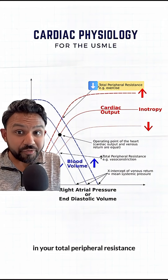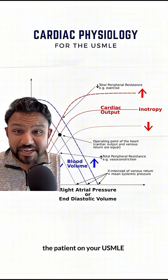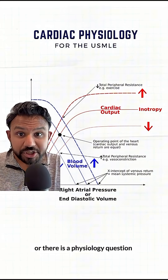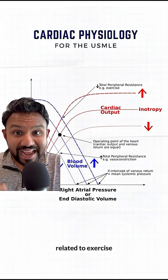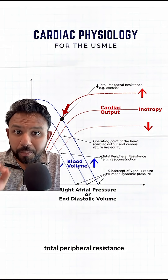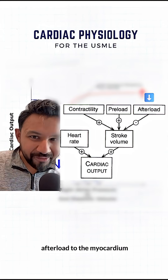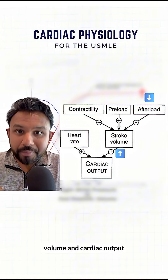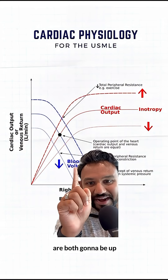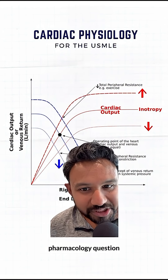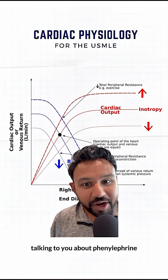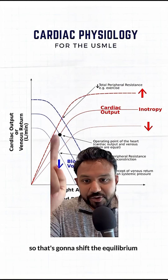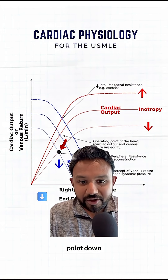The curve is going to go down or up when there is a change in your total peripheral resistance. If a patient is in septic shock or there is a physiology question related to exercise, a low total peripheral resistance means less afterload to the myocardium — thus your stroke volume and cardiac output are both going to be up. On the other hand, phenylephrine causes vasoconstriction, which is going to shift the equilibrium point down.